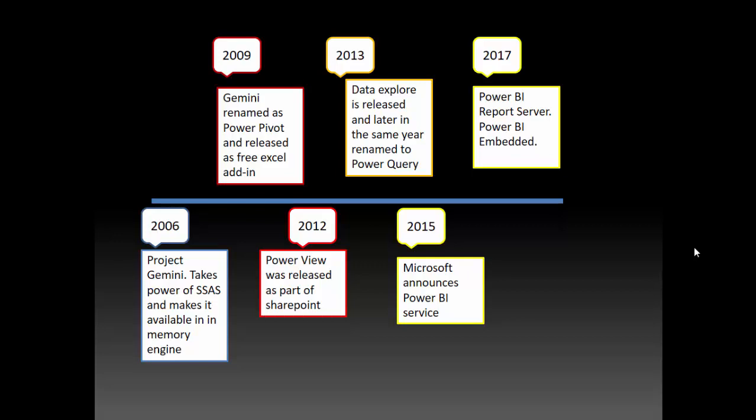If you look at this slide, in 2006 Project Gemini — which took the power of SSAS and made it an in-memory engine — became available. It seems like around 2006 the tabular model or in-memory model was conceived, but in 2009 it became more widely known.